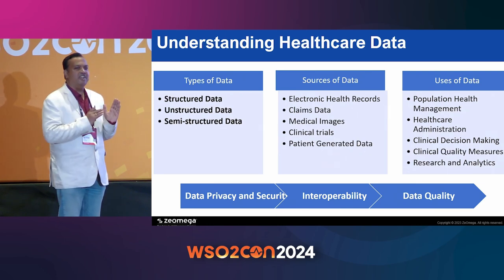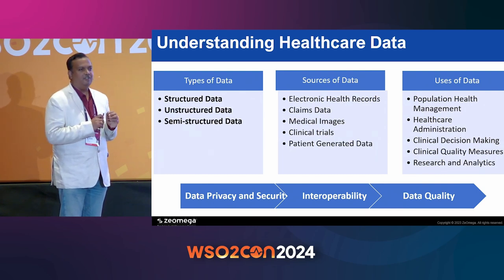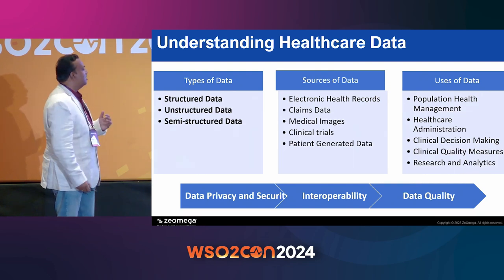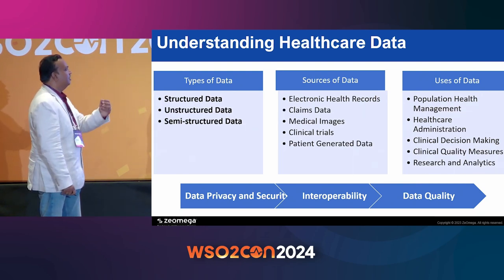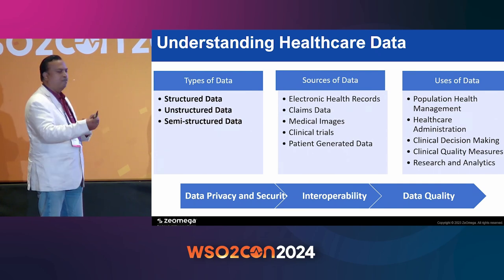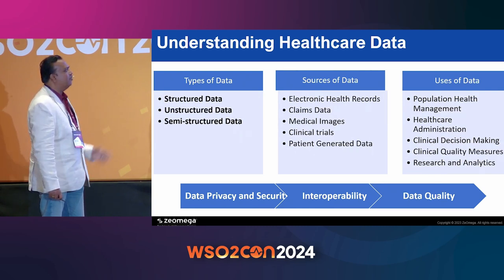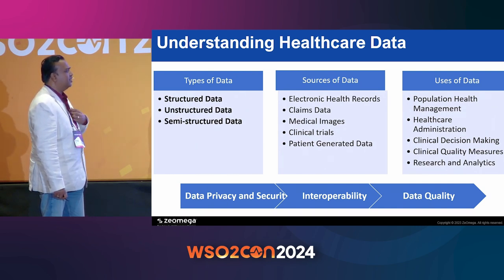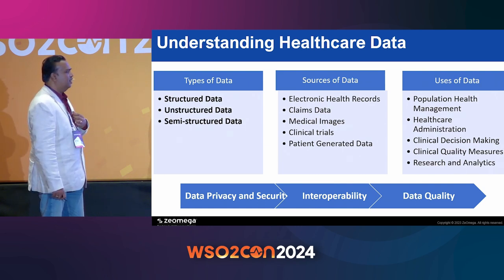Some systems have semi-structured data. Sources of data include electronic health records, claims data, medical images, clinical trials, and patient data. In the industry, data is used for population health management, healthcare administration, clinical decision-making, quality measures, and research and analytics. We focus more on population health management. Data privacy, security, interoperability, and data quality are all important considerations.